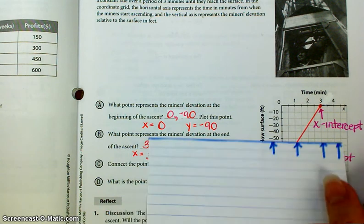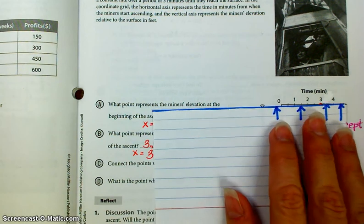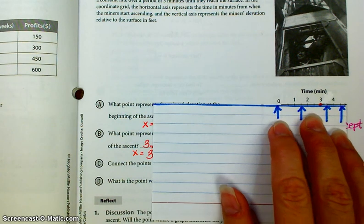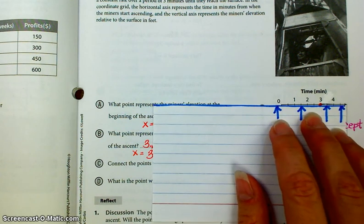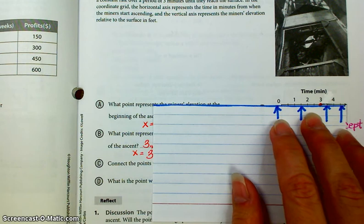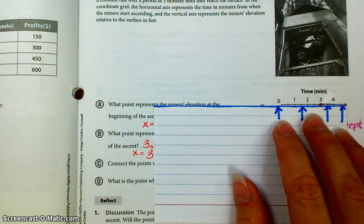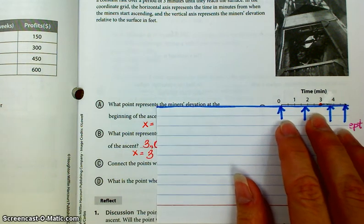For the x-intercept, your y-value is 0, because y-values are 0 for anything that's plotted on the x-axis.